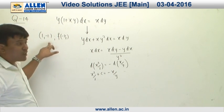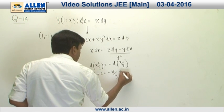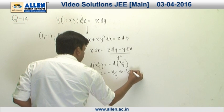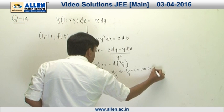Moreover, the curve passes through (1, -1), so this is going to satisfy this equation. This is going to be 1/2 + C = 1. So the value of the constant of integration is going to be 1/2.